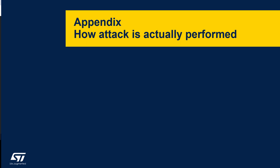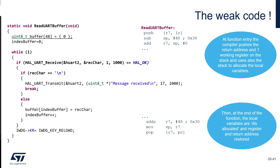Here is the appendix for this hands-on: how the attack is actually performed. Here is the code used in the weak application - we have a uart_read buffer function using a local buffer. We receive one character, check if it is a backslash-n, and if so, transmit the message. If not, we store the character in the buffer and increment the buffer index without checking the limit. This is where the weakness is. Then we reload the watchdog.